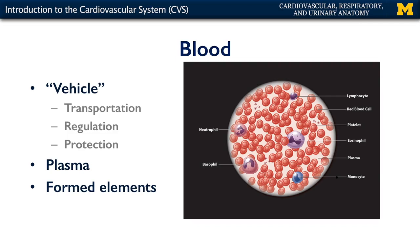The blood really is the vehicle for materials to flow by means of the heart through the vasculature. It transports materials. It also helps to regulate acid-base homeostasis and temperature. It serves a protective function in terms of it being a host to the immune system, and it also helps to regulate clotting. There are two major constituents to the blood: there's the plasma, which is largely water, and the formed elements, such as erythrocytes, leukocytes, and thrombocytes.